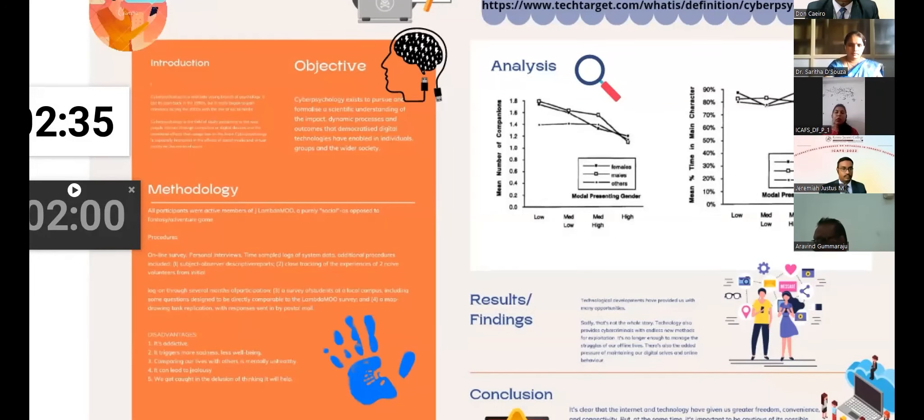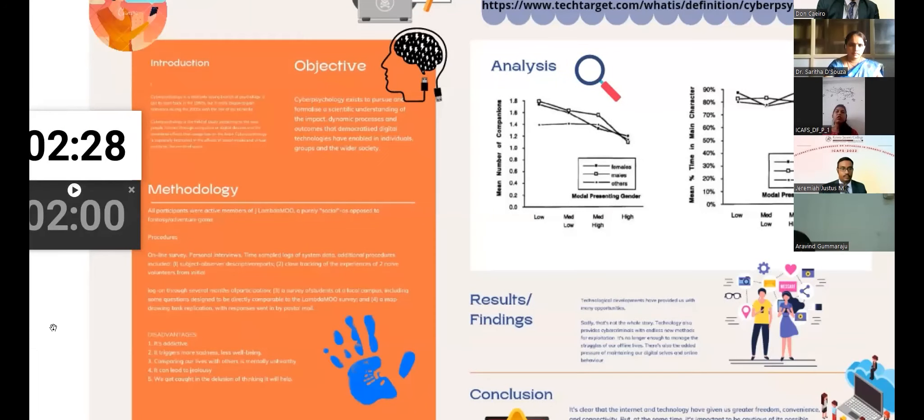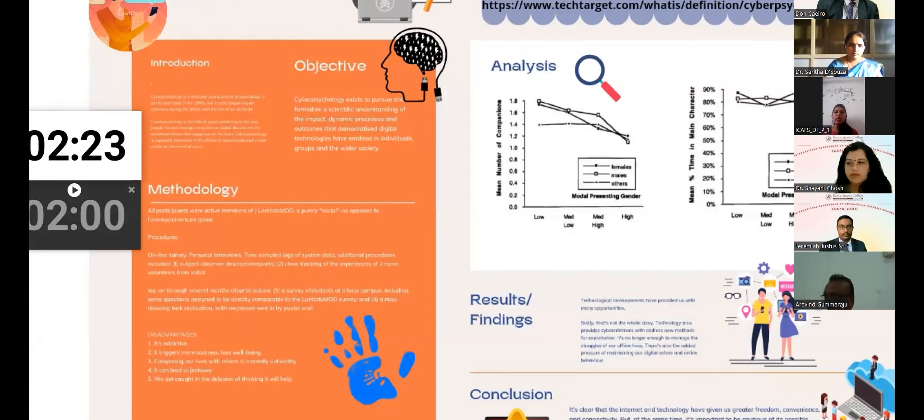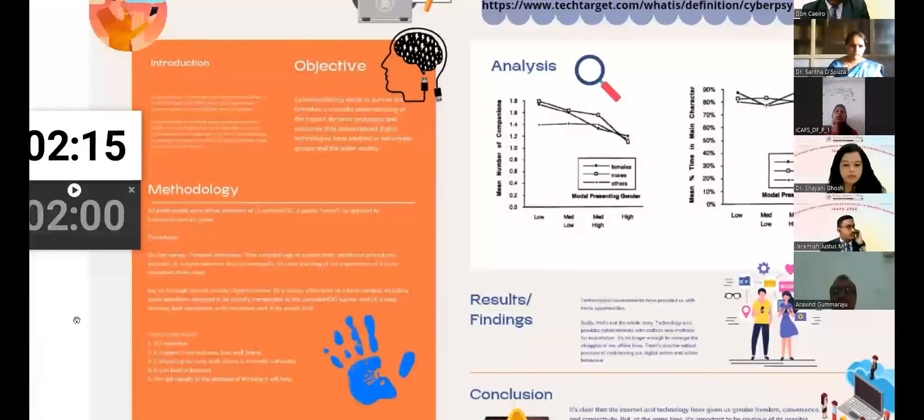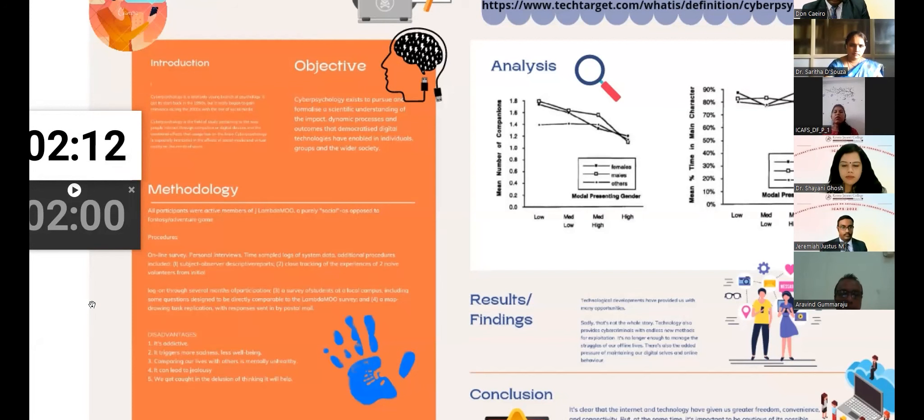Technological developments have provided us with many opportunities. Sadly, that's not the whole story. Technology also provides cyber criminals with endless new methods for exploitation. So one noted effect of social media is the lowering of a person's self-esteem due to the constant comparison of their own life to the glamorized lives portrayed by the people they follow online. And some effects are it's addictive, it triggers more sadness, less well-being. Comparing our lives with others is mentally unhealthy. It can lead to jealousy.